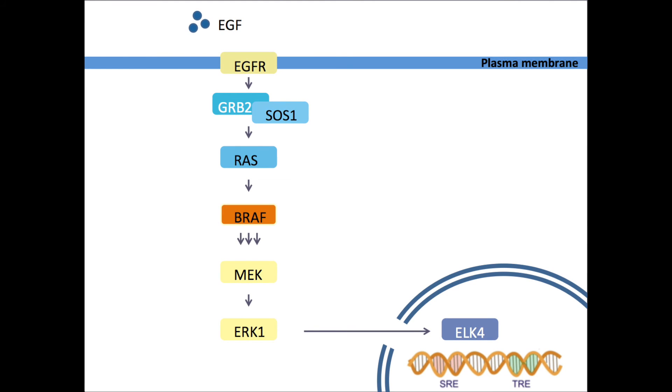Firstly, BRAF itself can get spliced, resulting in a new mutation or an amplification. Secondly, proteins downstream in the pathway can get mutated.